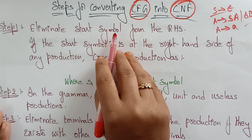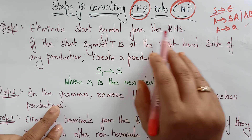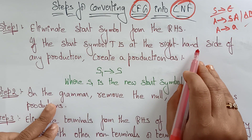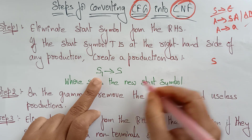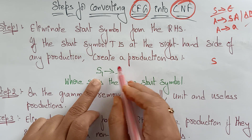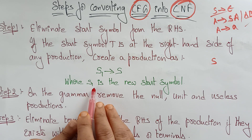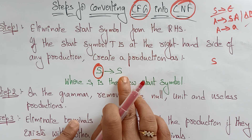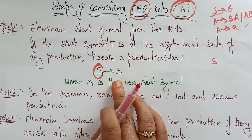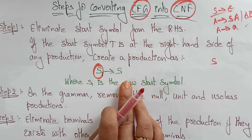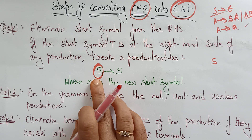The first step is: eliminate the start symbol from the right-hand side. If the start symbol S appears on the right-hand side of any production, create a new start symbol S1 and add the production S1 → S. So you replace S with S1 as the start symbol. This is the first step to converting the context-free grammar into Chomsky normal form — create a new production where the new start symbol S1 determines S.